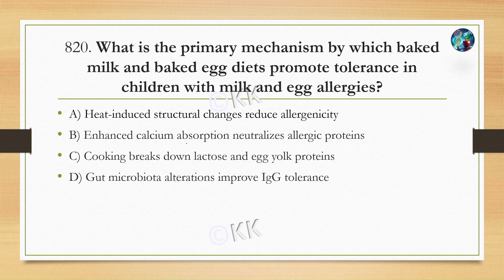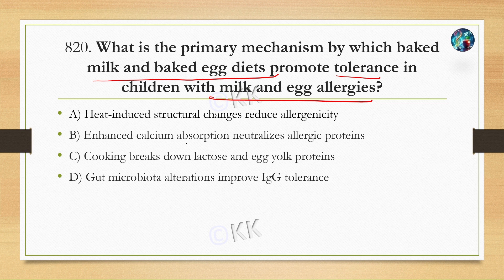What is the primary mechanism by which baked milk and baked egg diets promote tolerance in children with milk and egg allergies? Option A: heat-induced structural changes reduce allergenicity, Option B: enhanced calcium absorption neutralizes the allergic proteins, Option C: cooking breaks down lactose and egg yolk proteins, Option D: gut microbiota alterations improve IgE tolerance.